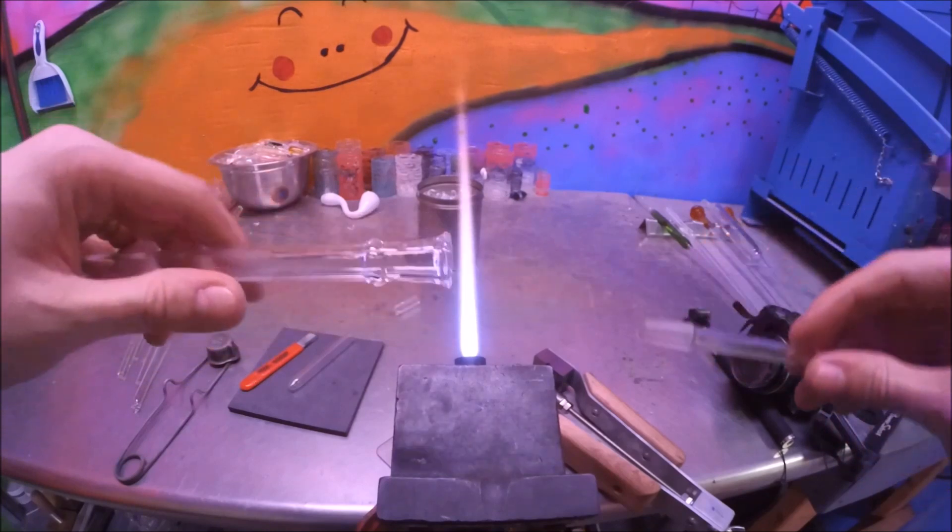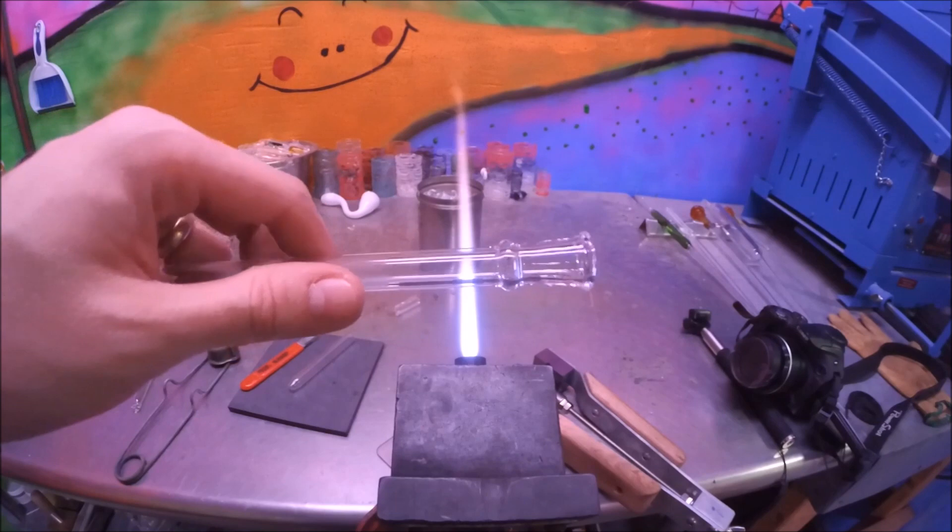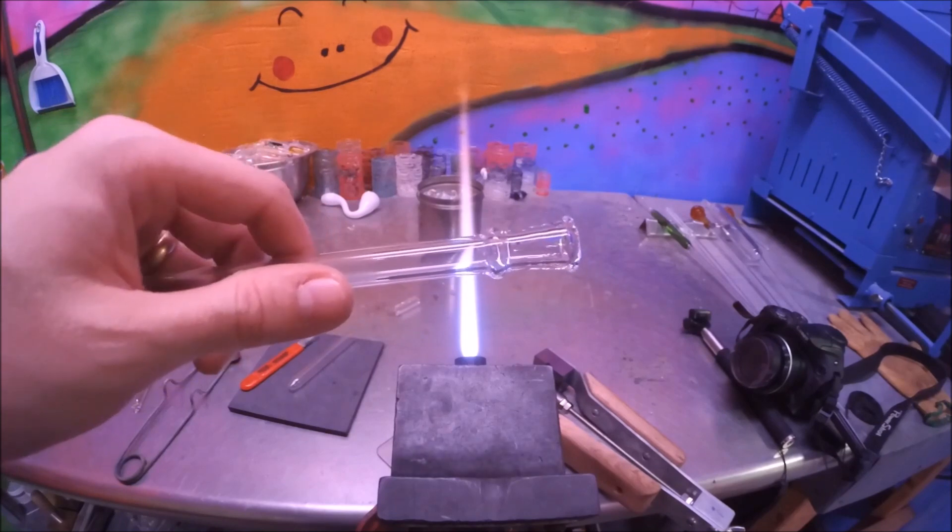That's how you make a 10 millimeter female joint with the Buddy Mansfield joint forming slash lipping tool. Thanks for watching.